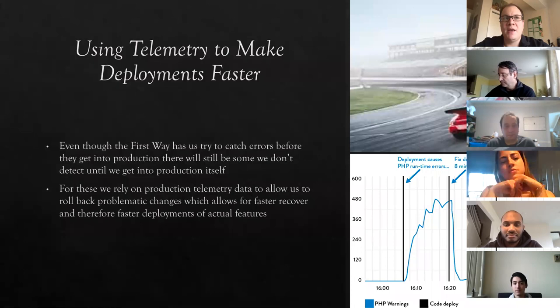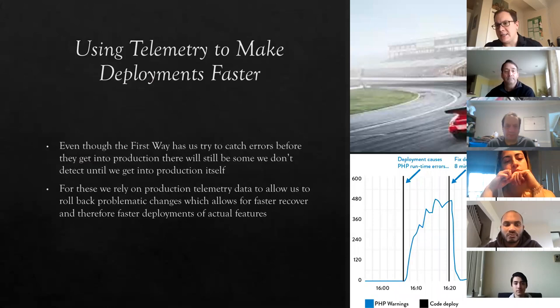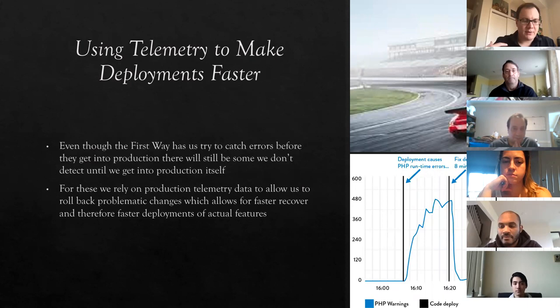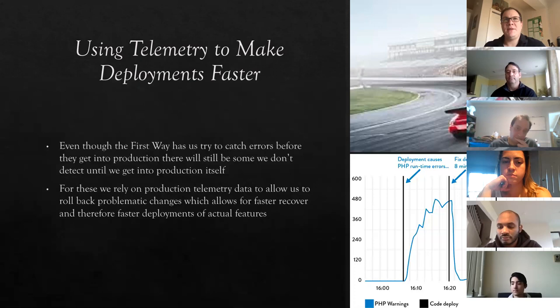Telemetry can also be used to make deployments faster. Even though continuous delivery helps push things through quickly with automated testing and source control, things are still going to go wrong in production, because no matter how much you make a system production-like, it's never going to completely simulate actual users or full integration with other systems. No plan survives the battlefield. When we have good telemetry data, it allows us to identify really quickly when a change has broken something and get it fixed faster.